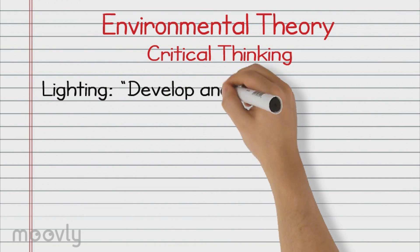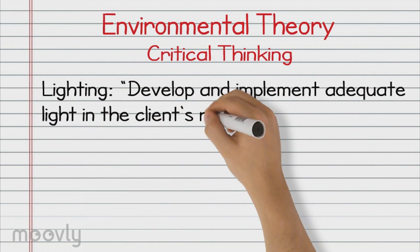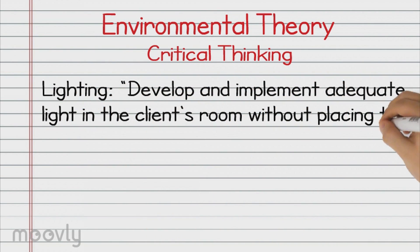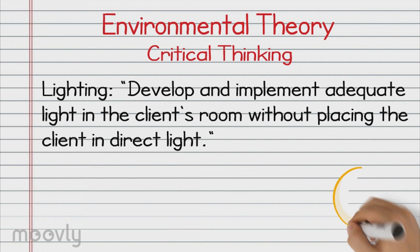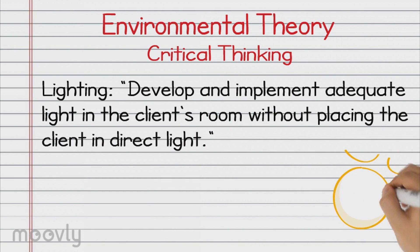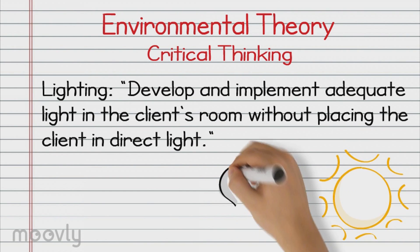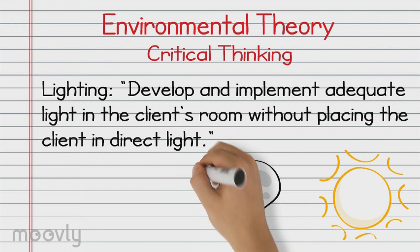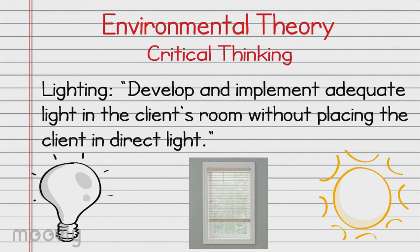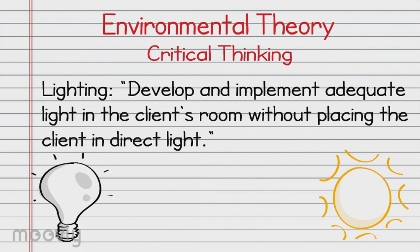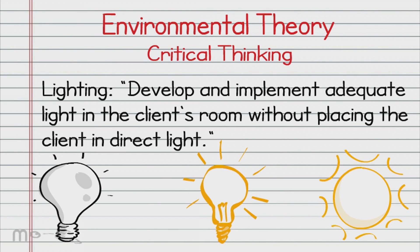Lighting. Develop and implement adequate light in the client's room without placing the client in direct light. Nurses need to be aware of the natural and artificial lighting in Johnny's room. This would include opening the blinds when he wakes up, but preventing the sunlight from directly hitting him, and remembering to turn off the lights, especially when he's sleeping.